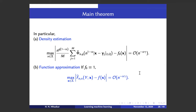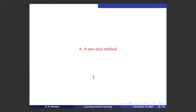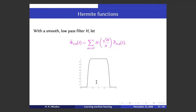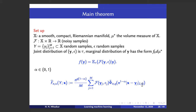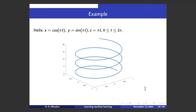It looks like I have solved the problem I wanted to solve. We now have a direct construction for function approximation from the data. We need to assume the manifold to prove a theorem, but the construction does not involve any knowledge about where the data is — except for the dimension of the manifold.